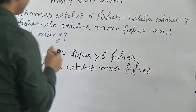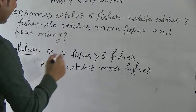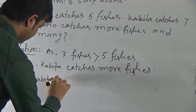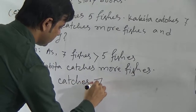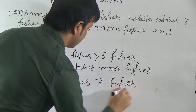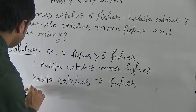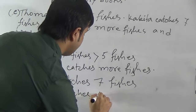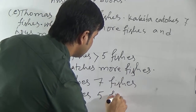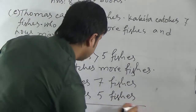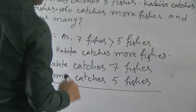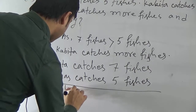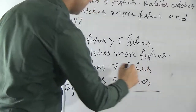Now we have to find out how many more fishes Covita catches. For this, we write: Covita catches 7 fishes and Thomas catches 5 fishes. If we subtract the fish count of Thomas from the fish count of Covita, we will get the difference — the number of more fishes.